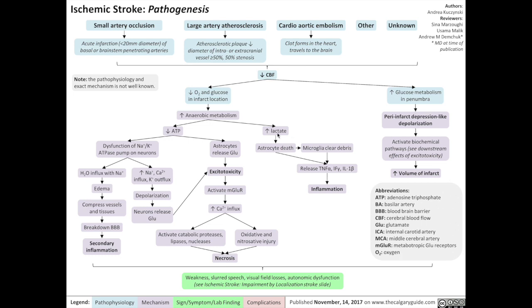Increased anaerobic metabolism also leads to the increased production of lactate as a byproduct. The accumulation of lactate is dangerous to brain tissue, leading to astrocyte death, releasing cytokines like TNF-alpha into the cerebral fluid, contributing to inflammation of the brain in that area. The clearance of debris by microglia will also release cytokines into that area of the brain, contributing to inflammation. Reduced cerebral blood flow will also increase glucose metabolism in the penumbra, which is the section of the brain that's surrounding the acute infarct. That will lead to peri-infarct depression-like depolarizations, which activates biochemical pathways that increase the volume of the infarct. In other words, increasing the amount of brain tissue that continues to die from the stroke.